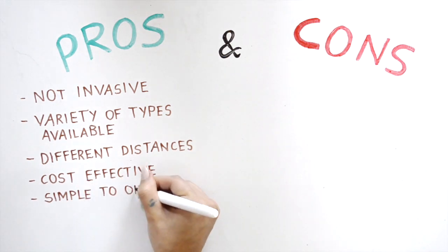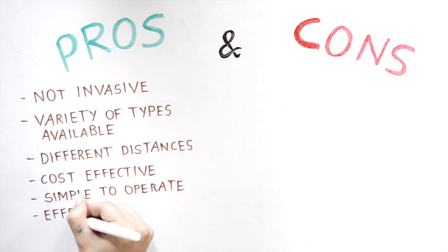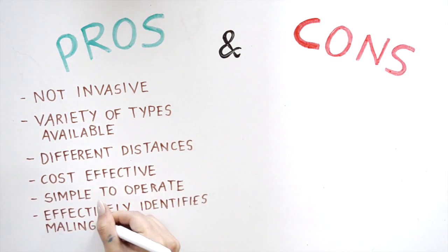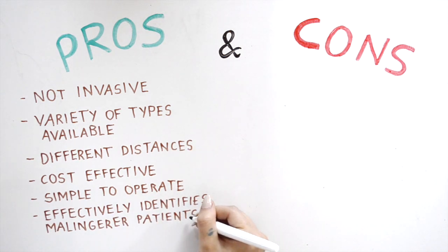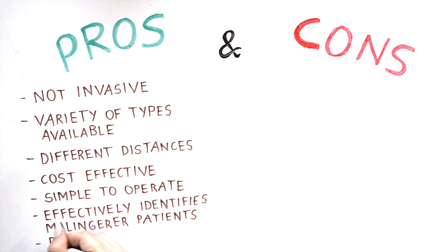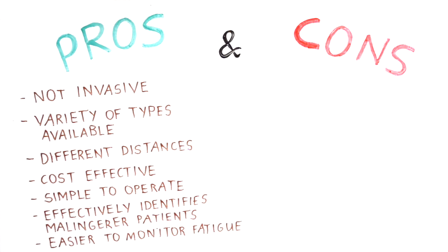Additional benefits include being cost effective and easy to operate, the fact the test can effectively identify a malingerer. After performing the test at one meter, the examiner can move the patient back to two meters. The results received from a malingerer will differ to the results obtained from a patient with an organic vision loss, and it being easy to monitor fatigue by maintaining fixation on the patient by the examiner.